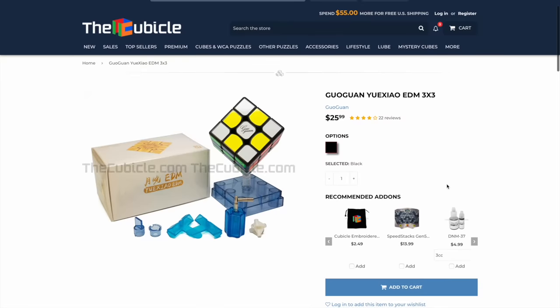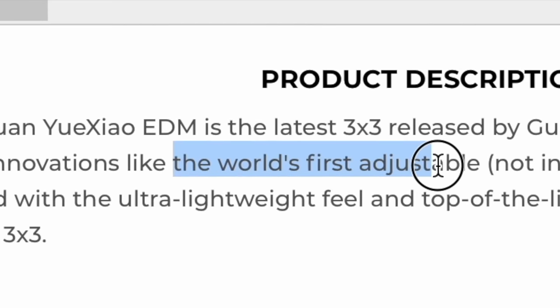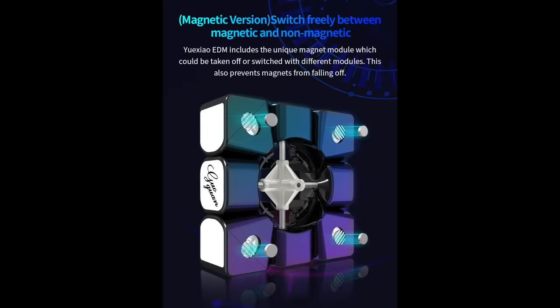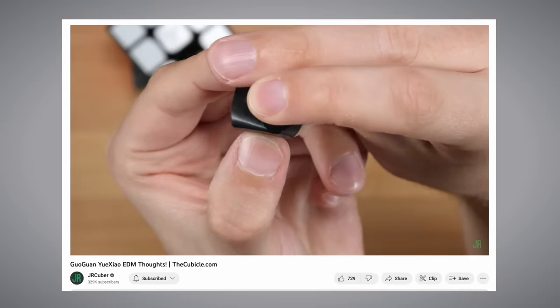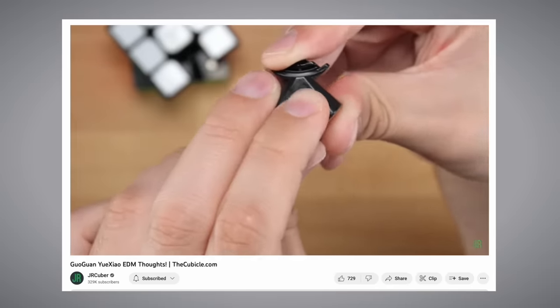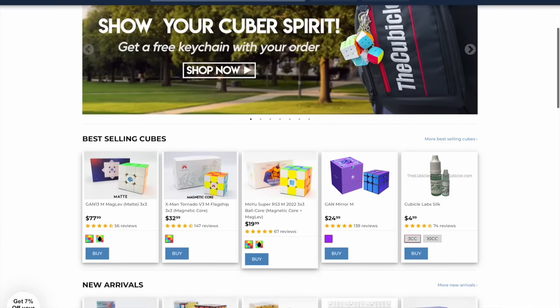But then in 2019, the YuXiao EDM had the world's first adjustable, non-interchangeable magnetic system. It had a lever in all the edges that changed the magnetic position, so that by moving it further away from the corresponding corner magnet, you could adjust the magnetic pull. Now, you can still find similar systems in newer releases.